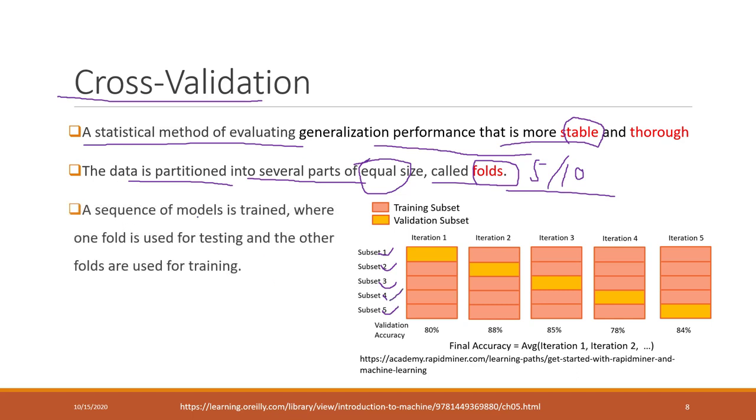Next, we are going to train the model for multiple times. A sequence of models is trained where in each sequence one fold is used for testing and the other folds are used for training. For example, in the first iteration, the first fold is used for the testing or sometimes they call it a validation subset, and the other folds are used for the training data. We train the model based on the other four folds and we test data by using this one fold.